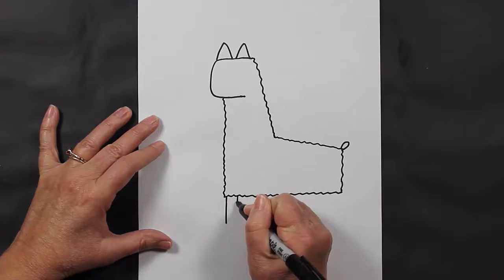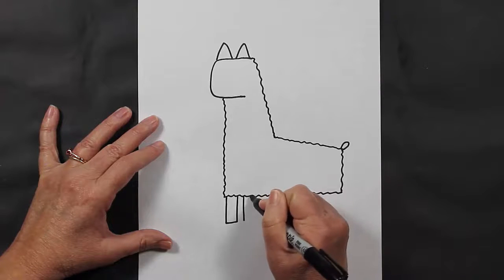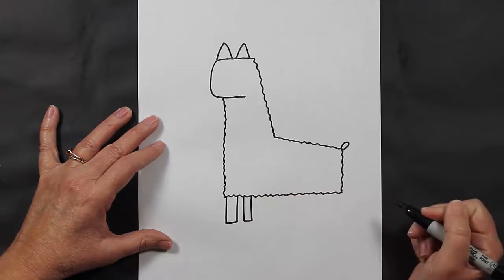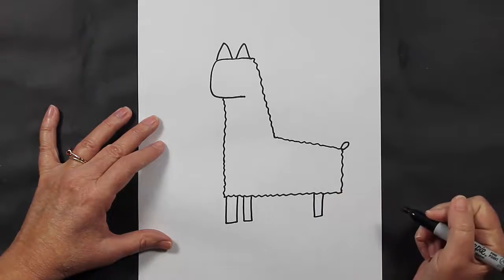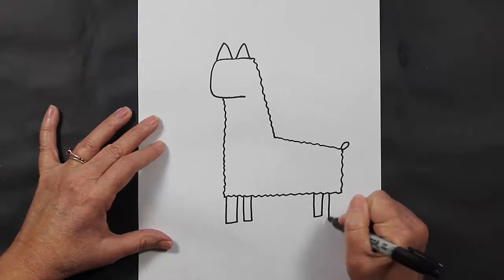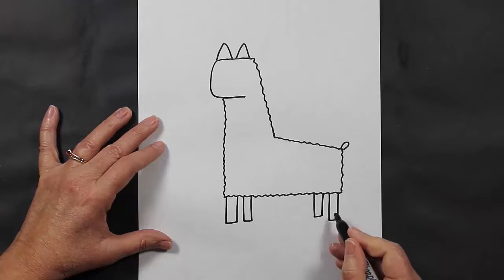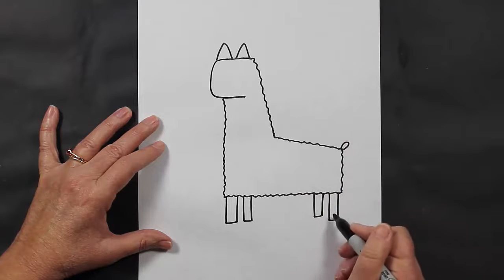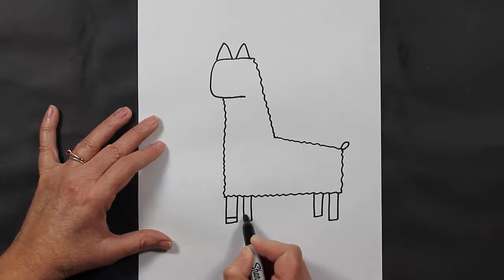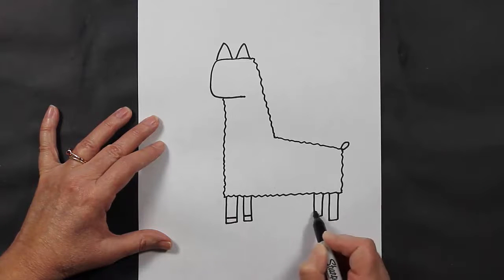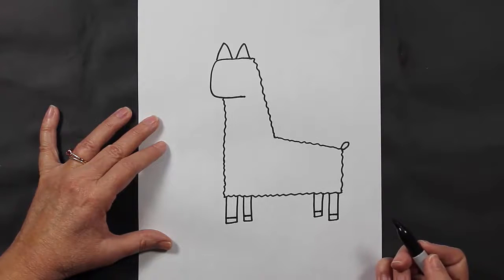So we're going to make line, line, close up, line, line, close up, line, line, close up. I made this one a little bit longer because this is facing us a little bit more—it's a little closer to us. Now we're going to make a little line inside of each one of these rectangles for his little hooves.